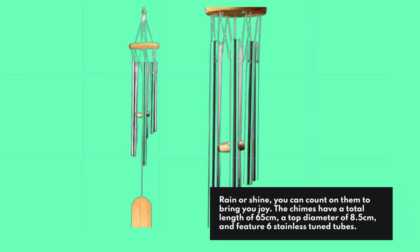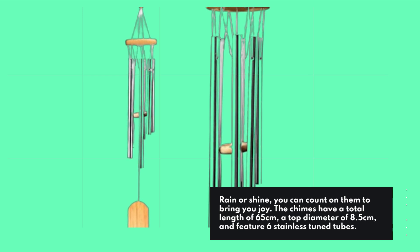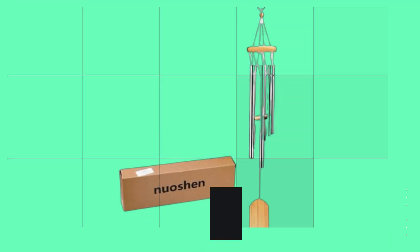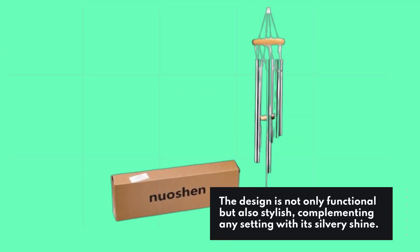The chimes have a total length of 65 cm, a top diameter of 8.5 cm, and feature six stainless tuned tubes. The design is not only functional but also stylish, complementing any setting with its silvery shine.